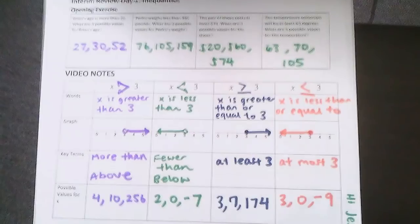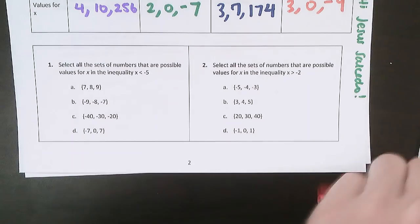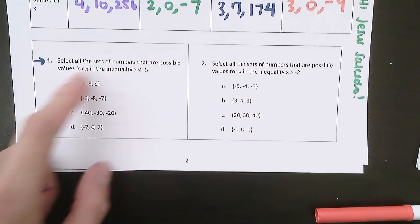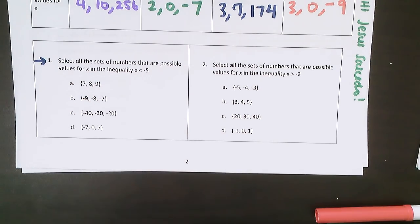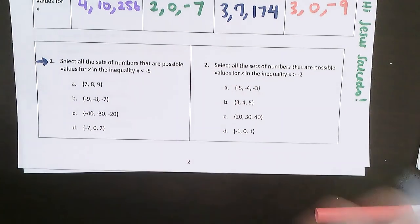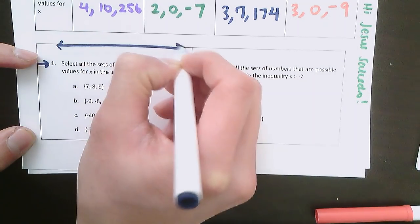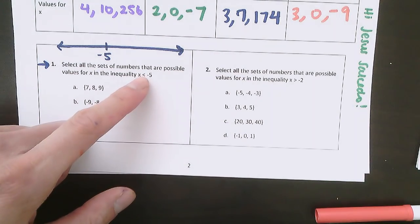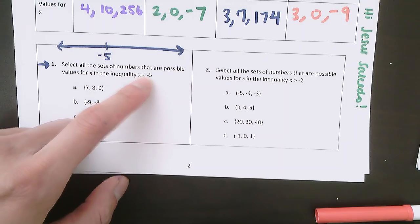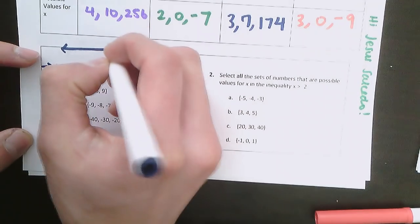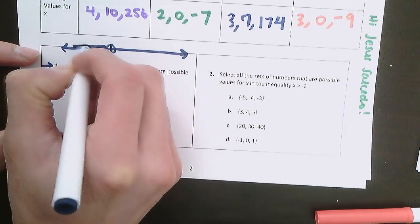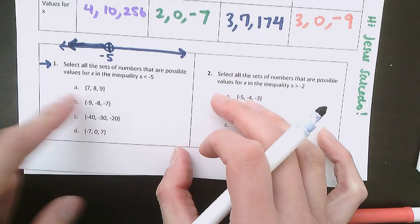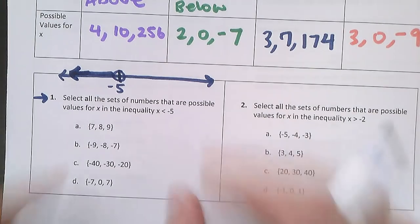Now that we have these four symbols and know what they mean, let's try some problems. Number 1 says to select all sets of numbers that are possible values for x in the inequality x is less than negative 5. Any time you're working with an inequality, it might help to draw a number line. I'm going to use the top part as a number line and put on negative 5. We know x is going to be less than negative 5 — the alligator eats the bigger number, so negative 5 is the bigger number and x is smaller. So I'll do an open circle at negative 5 and mark all the numbers to the left.